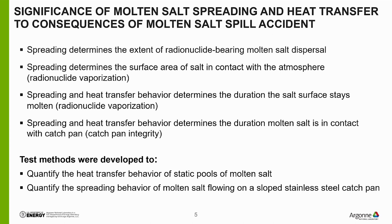The processes we're investigating—specifically spreading and heat transfer behavior of spilled molten salt—are significant to the consequences of molten salt spill accidents. Spreading determines the extent of radionuclide-bearing molten salt dispersal during and after a spill. The extent of spreading also determines the surface area of salt in contact with the atmosphere, which is required to model the vaporization rate of radionuclides from a spilled salt pool. The extent of spreading and heat transfer behavior determine the duration the surface stays molten, relevant to radionuclide vaporization, and also determine how long molten salt is in contact with the catchpan, which has implications for catchpan integrity.